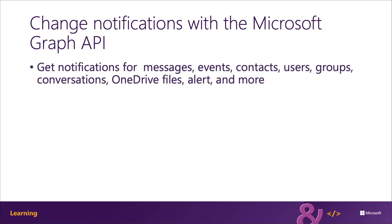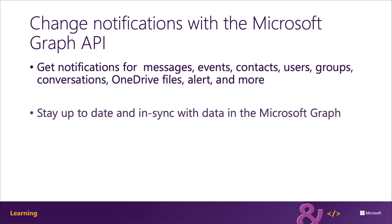So what can you get notifications for? You can get notifications on messages, events, contacts, users, groups, conversations, OneDrive files, alerts, and more. This allows you to stay up to date and in sync with data that is accessible via Microsoft Graph.